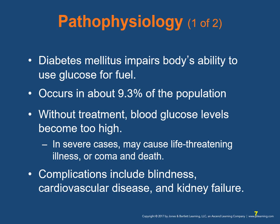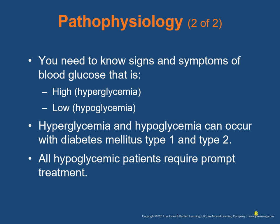Treatments for diabetes include medications and injectable hormones that lower blood glucose. If administered correctly or incorrectly, they can create a medical emergency. Low blood glucose, hypoglycemia, if unrecognized and untreated, can be life-threatening. You must also recognize the signs and symptoms of high glucose, hyperglycemia, which can result in coma or death. If treatment exceeds a patient's need, it can cause a life-threatening state of hypoglycemia.